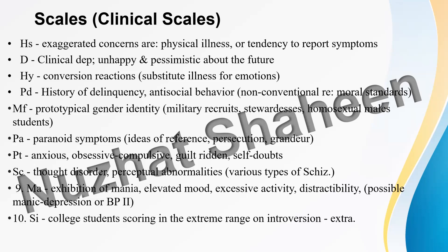Inspired by Terman and Miles, items were selected by comparing masculine with feminine responses. Males with very high MF scores have infrequently been found to be overt or repressed sexual inverts, however homosexual abnormality must not be assumed on the basis of a high score alone. The MF score is often important in vocational choice — it is well to match a subject vocationally with work appropriate to their MF level.